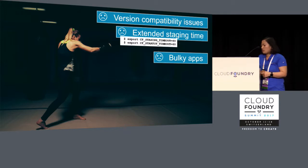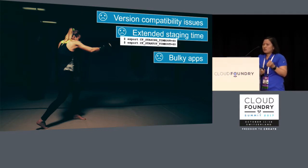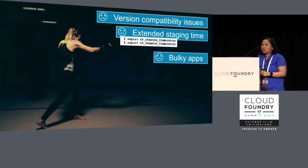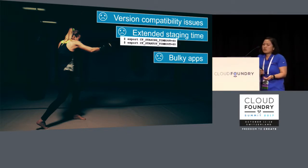The second challenge is even bigger — the extended staging time. By default, I think the Cloud Foundry staging is only 15 minutes. But when you use a customized R buildpack, the installation of the base R package and all the R dependency libraries are all included in the staging time. Chances are most of the time you will exceed this 15-minute staging time threshold. Of course, you could set the CF staging timeout as well as the startup timeout, but it's just a pain — they have to remember to do that.